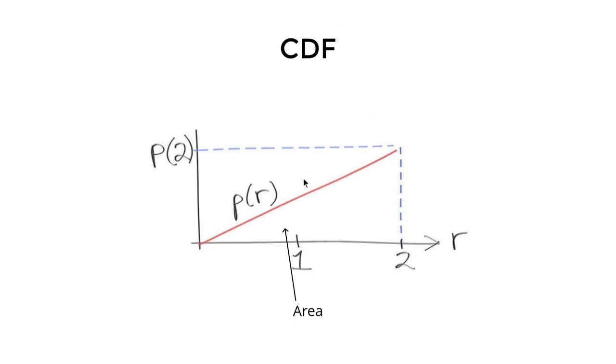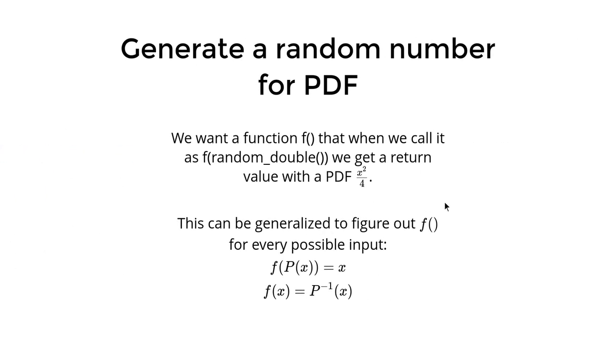Look at this diagram again. The cumulative density function CDF, we can treat it as an area of this diagram. CDF(1) is the area of the small triangle here, and CDF(2) is the area of the whole triangle.